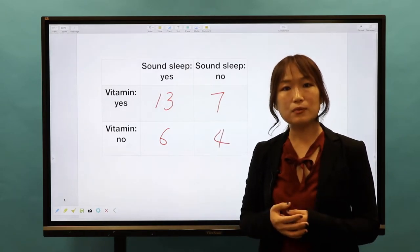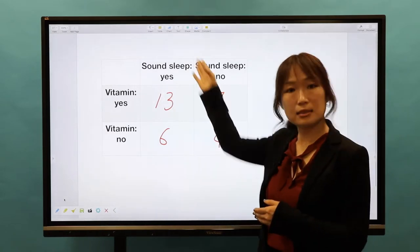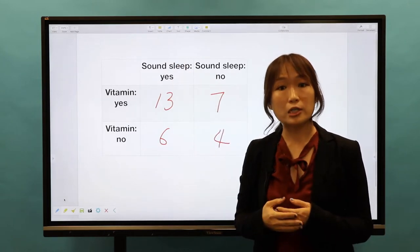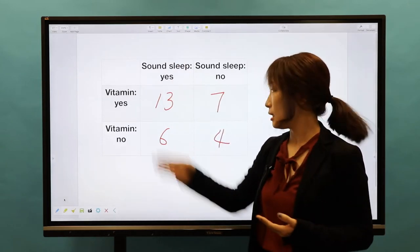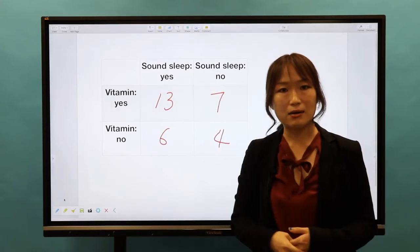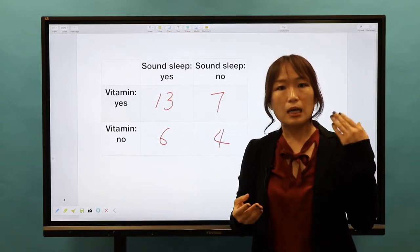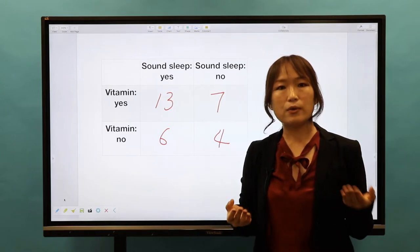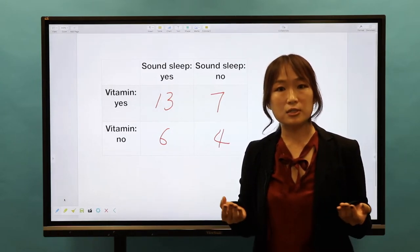A contingency table, which is a matrix or a rectangular array of frequencies in rows and columns, as is showing right now. It is a table showing frequency counts under different conditions.